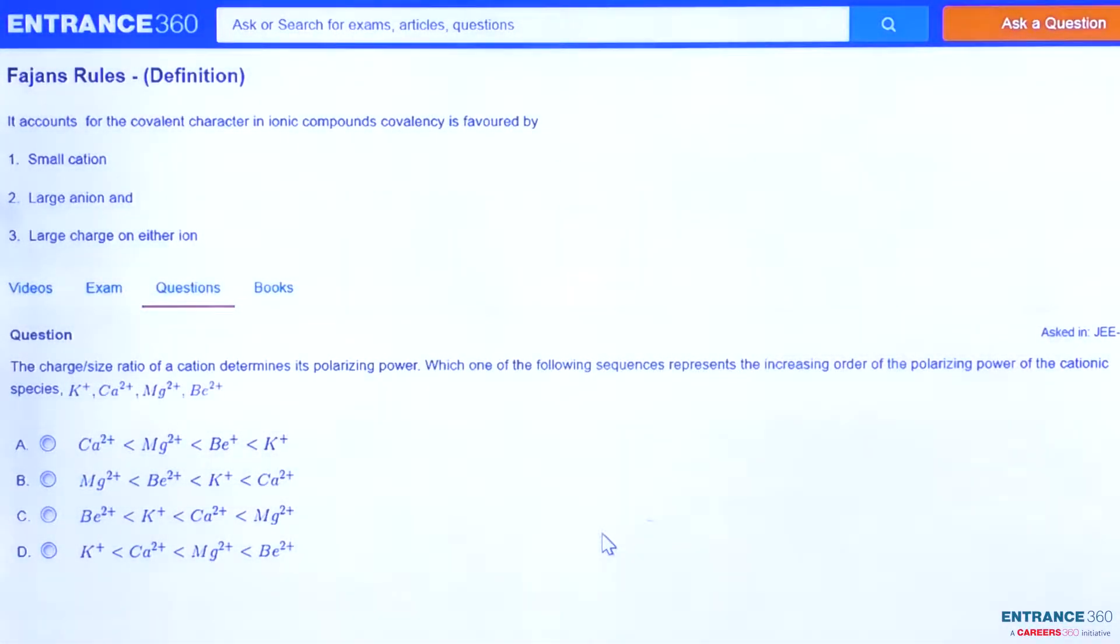Hello students, now we are going to discuss a problem from JEE Main 2007. The question is: the charge by size ratio of a cation determines its polarizing power. Which one of the following sequences represents the increasing order of the polarizing power of the cationic species?